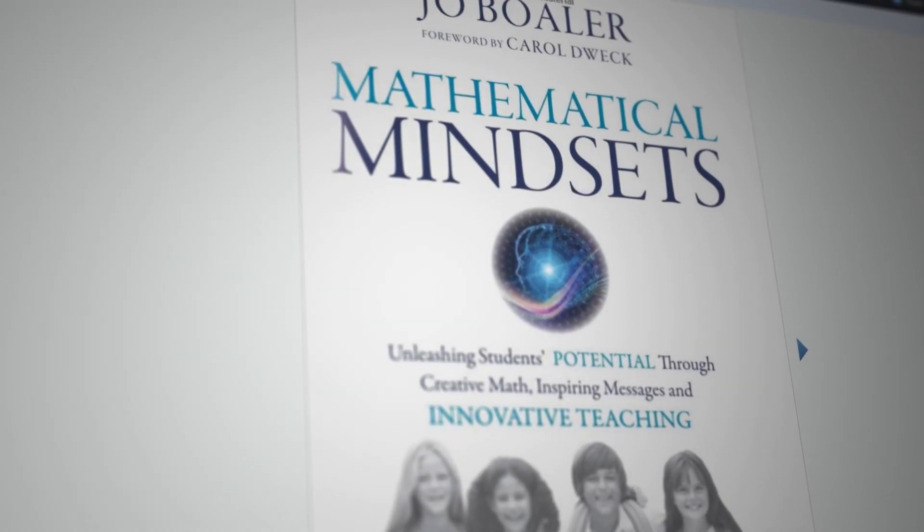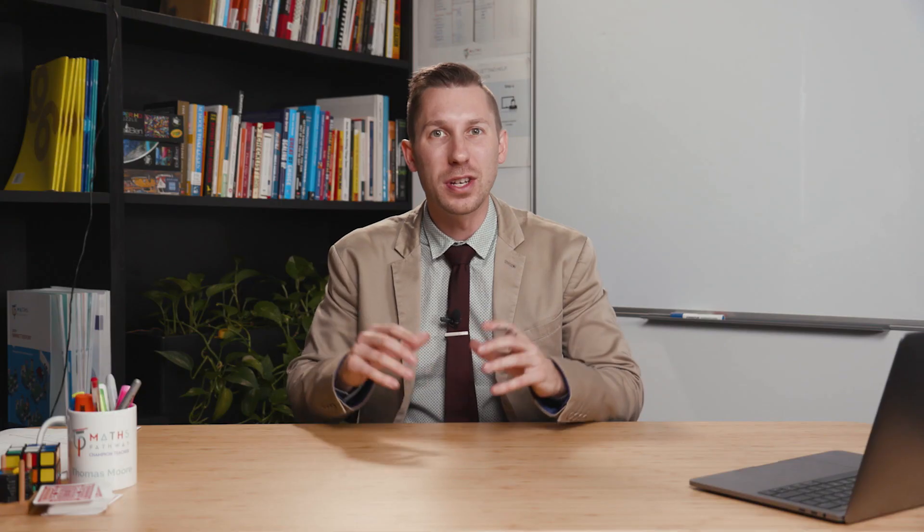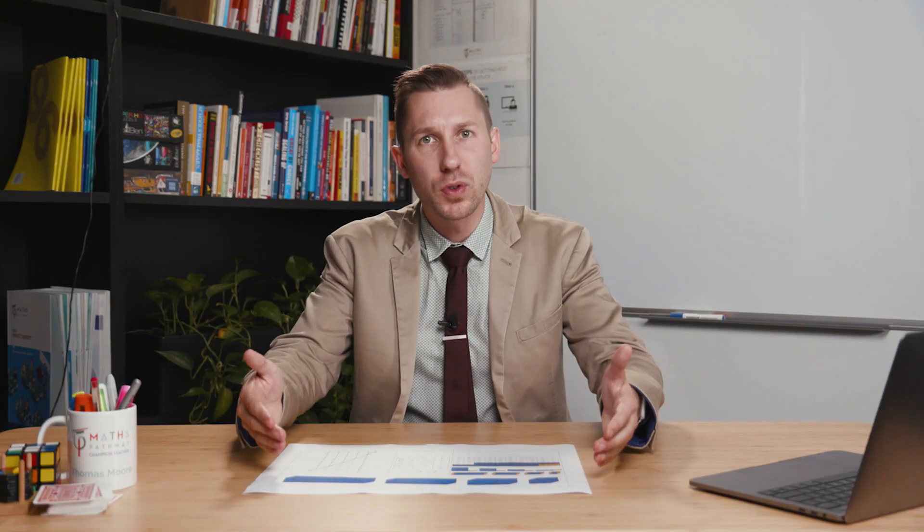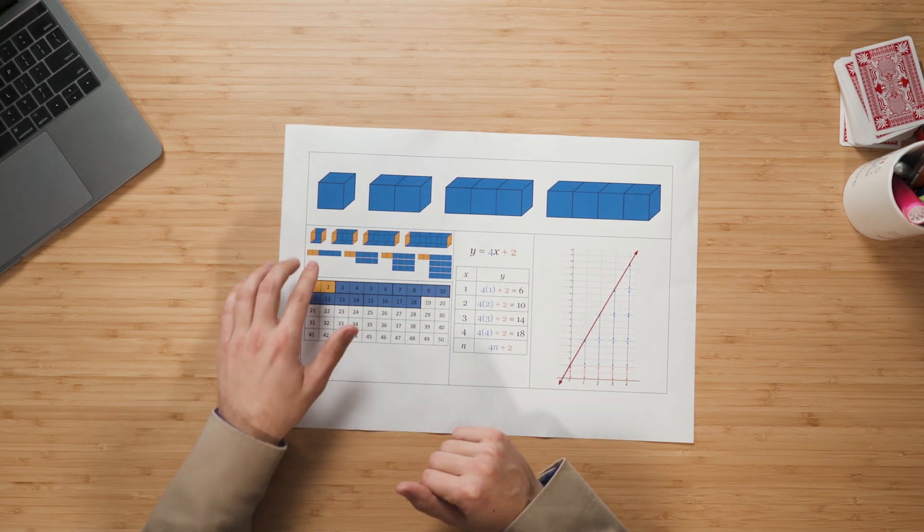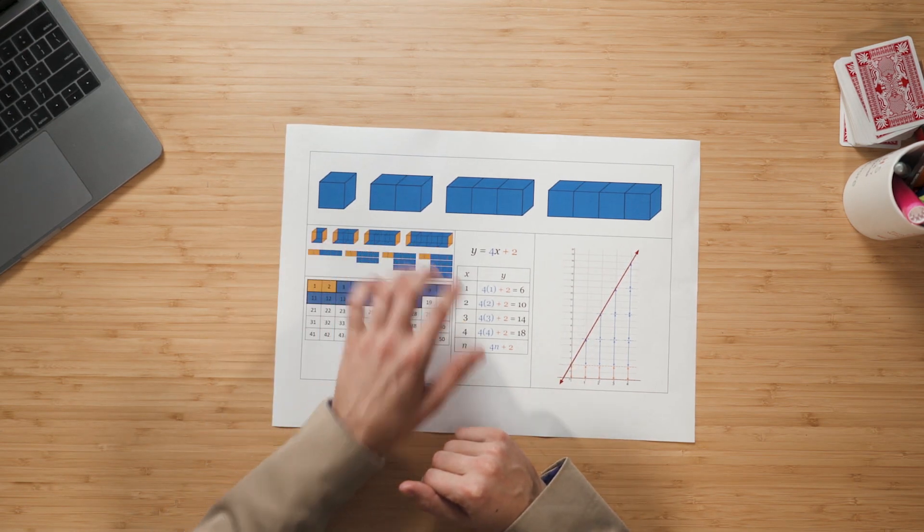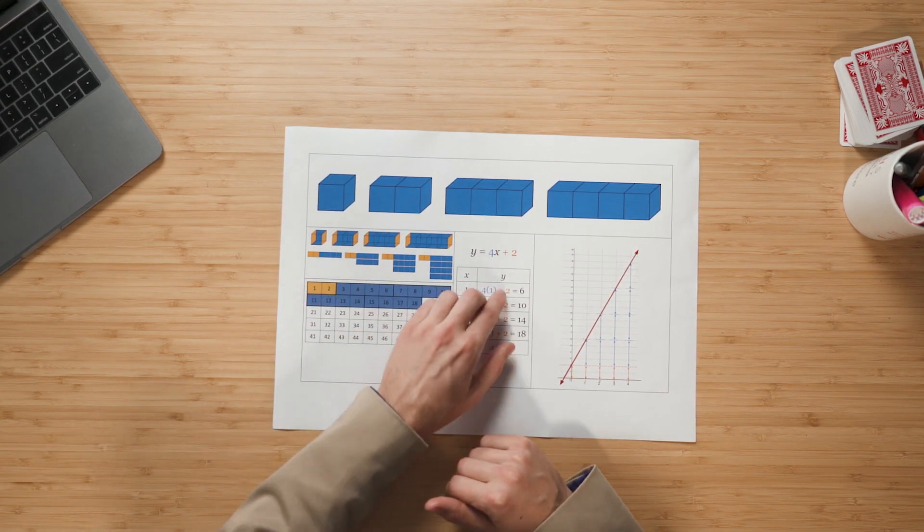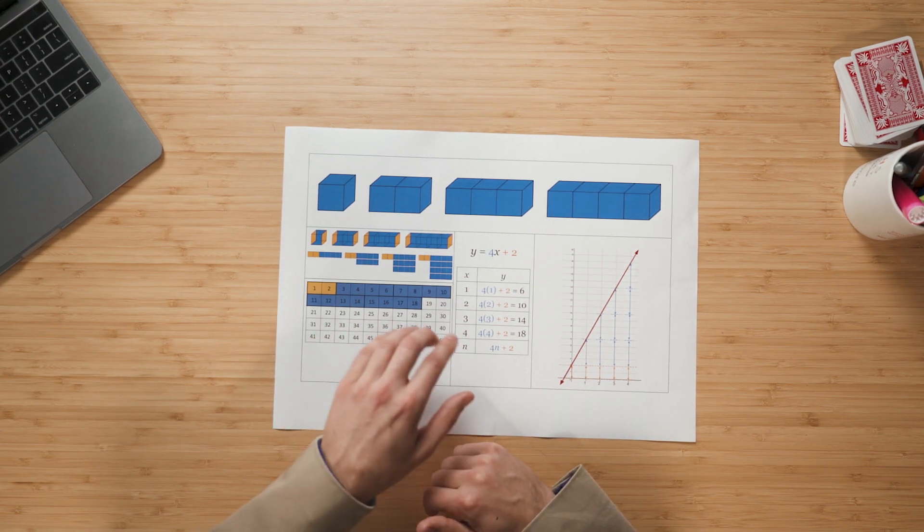In her book, Mathematical Mindsets, Jo Boaler discusses a fantastic way that you can get students to really bring all of this together. And that's through using algebra posters. It involves drawing out the physical model, and then breaking this down to really show what's happening using different colors. For example, you can see here the two ends that were always consistent are highlighted in yellow.